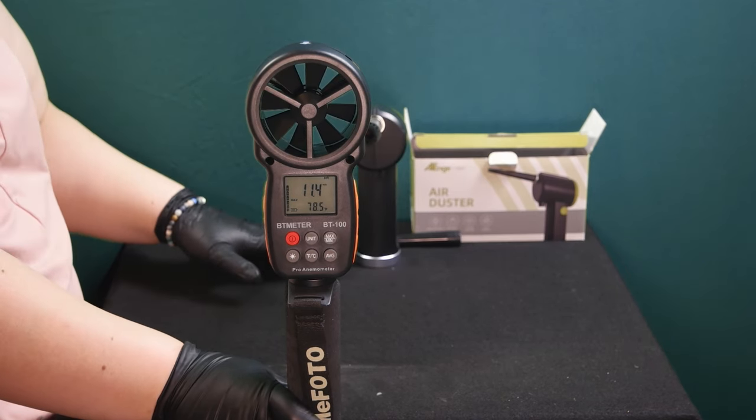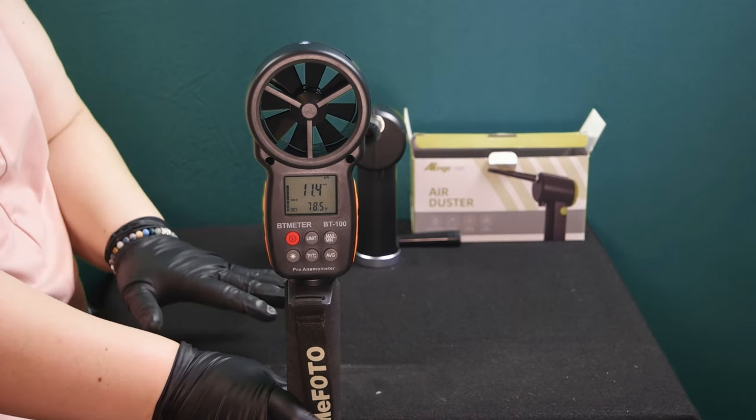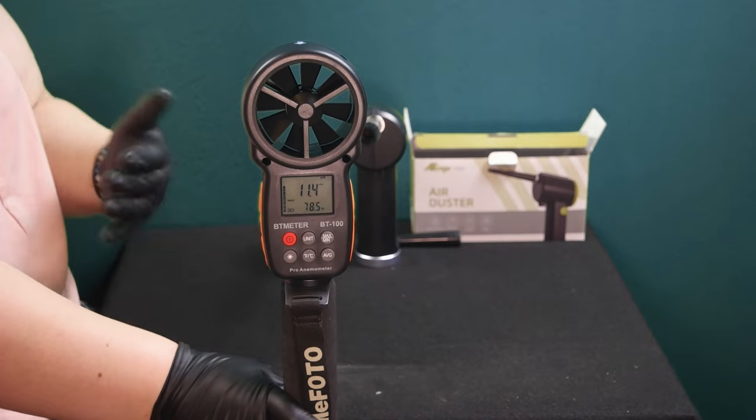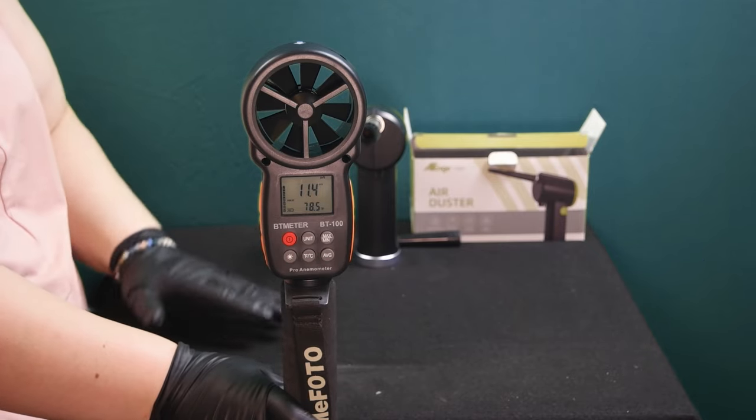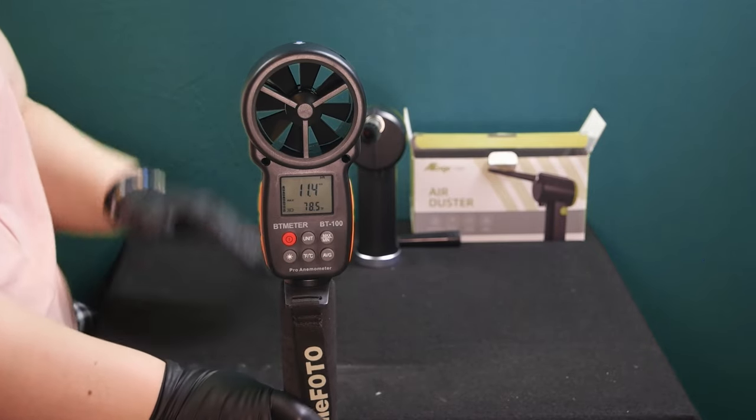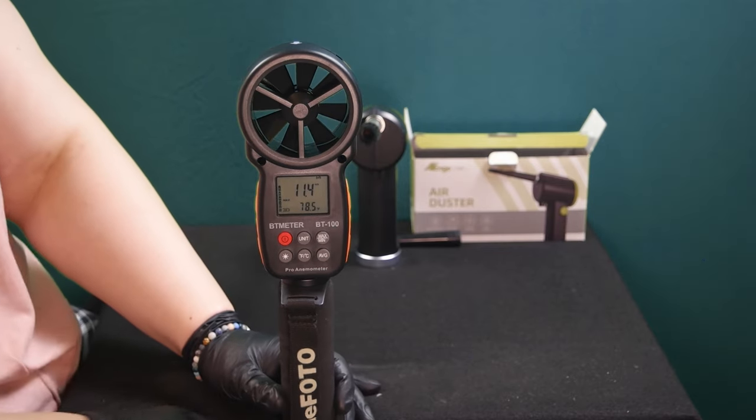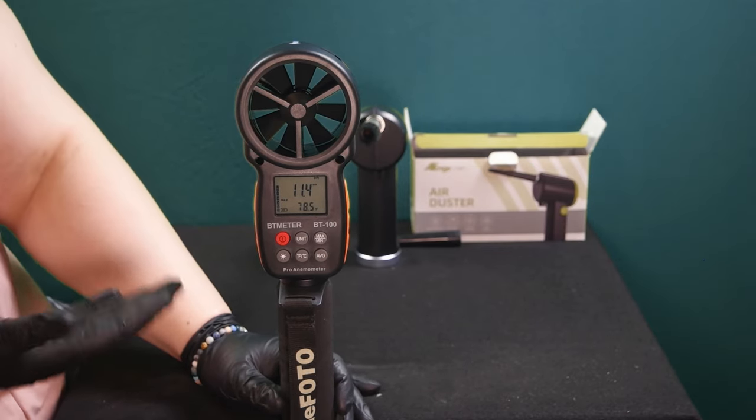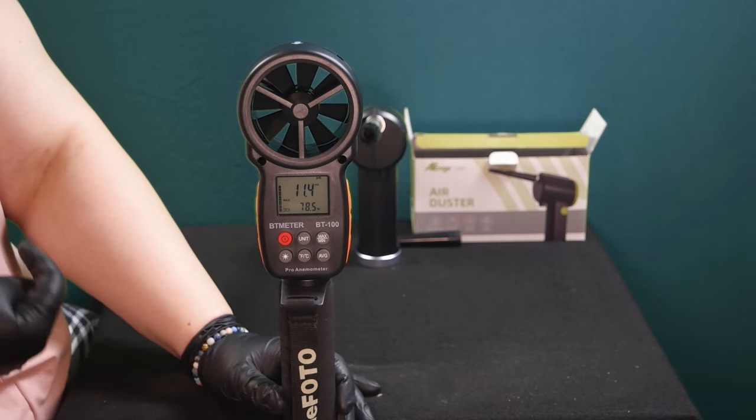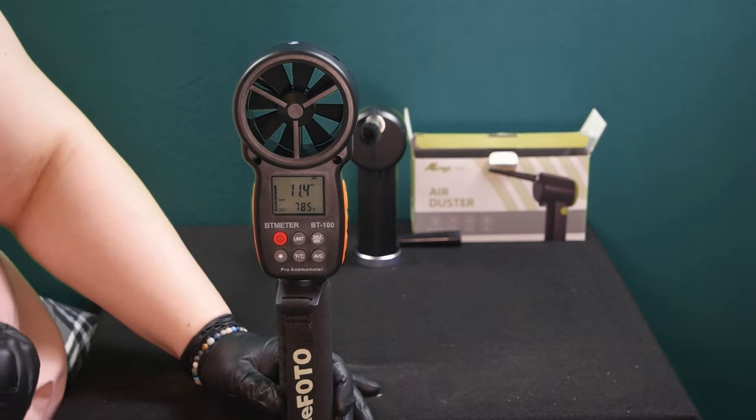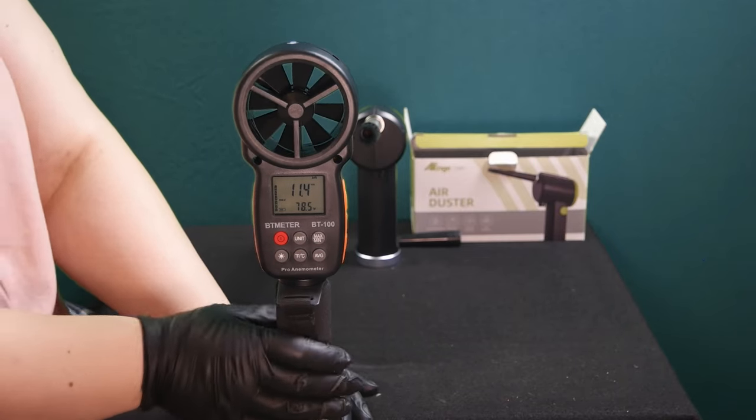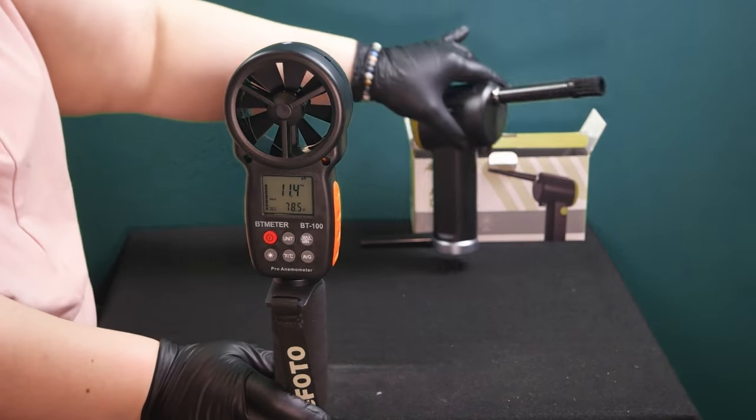Granted, this is only an air duster. This is just to show that this does work. However, this is rated from 1 up to 60 miles per hour. But you can see here that the reading it's showing for the highest setting on the air duster is just shy of 11.5 meters per second.